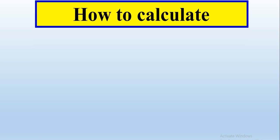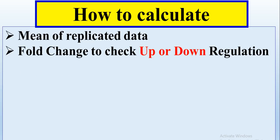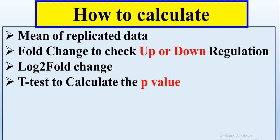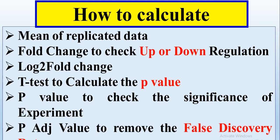In this video, we will try to learn how to calculate the mean of replicated data, the fold change to check whether our treated samples as compared to control are upregulated or downregulated, log2 fold change, t-test to calculate the p-value to check whether our treated sample has a significant or non-significant effect, and the p-adjusted value to remove false discovery rates within the p-value during t-test.